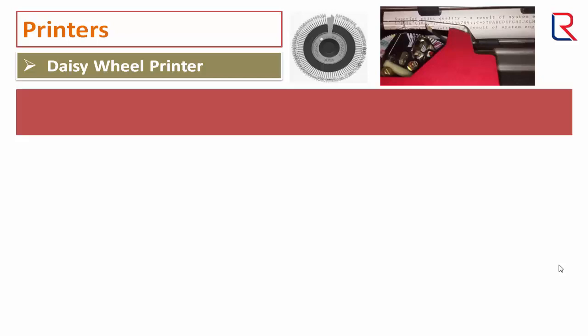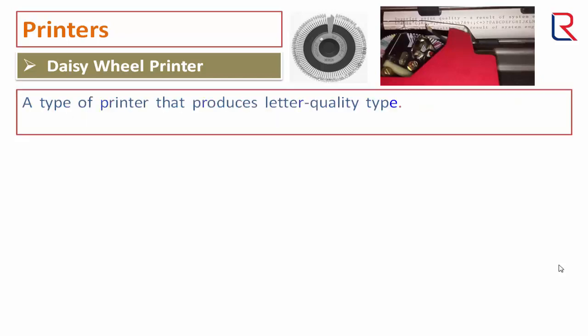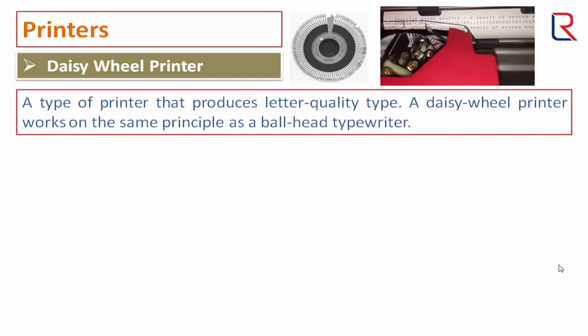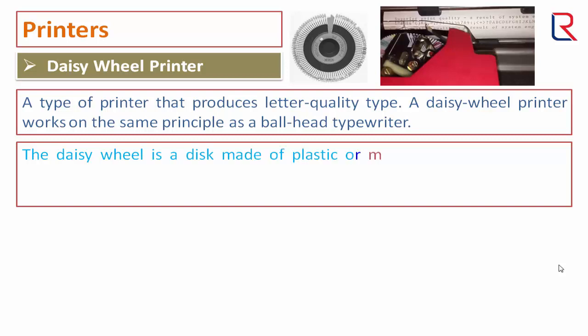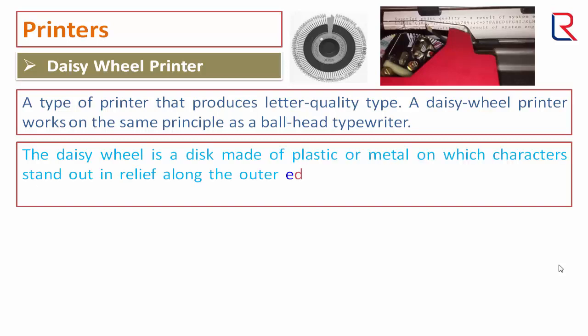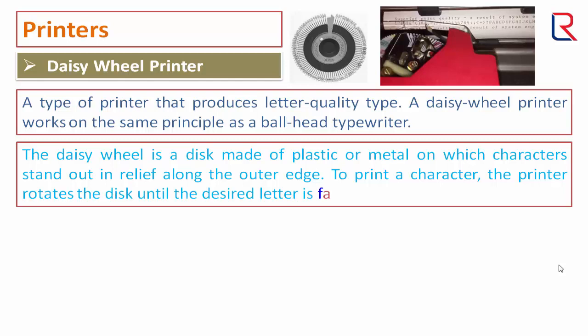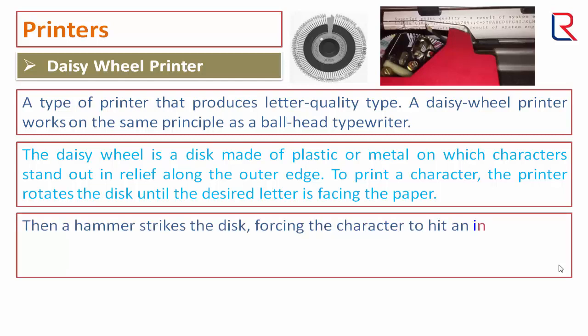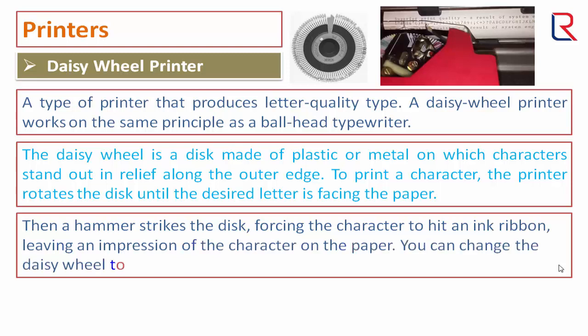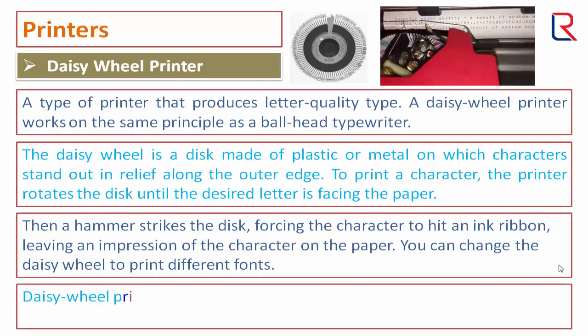A daisy wheel printer produces letter-quality type and works on the same principle as a ball-head typewriter. The daisy wheel is a disk made of plastic or metal on which characters stand out in relief along the outer edge. To print a character, the printer rotates the disk until the desired letter faces the paper, then a hammer strikes the disk, forcing the character to hit an ink ribbon and leave an impression on the paper. You can change the daisy wheel to print different fonts. Daisy wheel printers cannot print graphics and are generally noisy and slow.